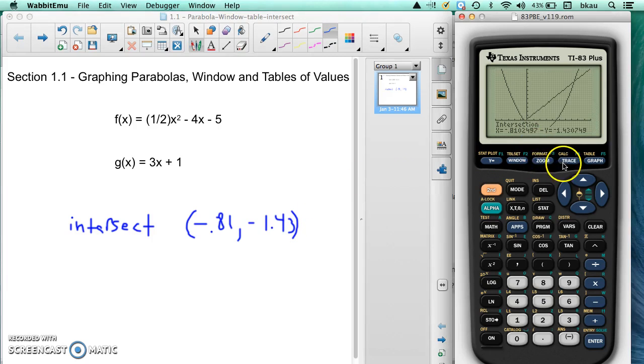And then the other one, if we wanted to go back we do the same thing. Second, calculate, number 5 for intersect. First curve, we can just say enter because that's Y1 and Y2. Second curve, push enter. Guess, we need to move to where we think the second intersection point is because it was sitting on the first intersection point already. The second intersection point looks close there. We push enter, and there's our second intersection point.